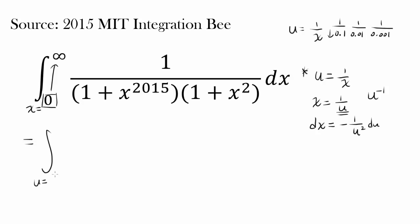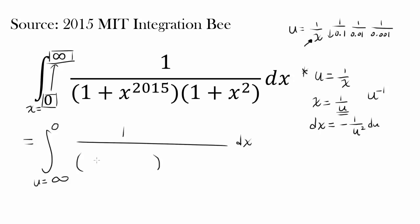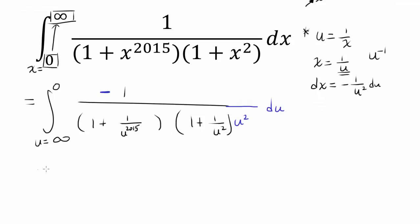Remember to change the bounds correspondingly. So we integrate from u equals infinity down to 0, since x equals infinity corresponds to u approaching 0. The integrand becomes 1 over (1 plus 1/u to the 2015) times (1 plus 1/u squared), and dx becomes negative 1 over u squared du. Let's write that in with the negative sign out front and u squared in the denominator.